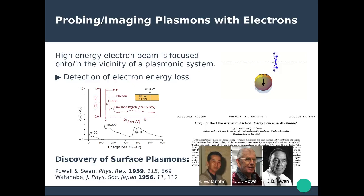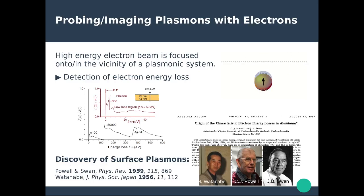Surface plasmons were discovered back in the 1950s by Powell and Watanabe, who used EELS measurements to look at aluminum and observe surface plasmons — both the bulk plasmon and the surface plasmon.